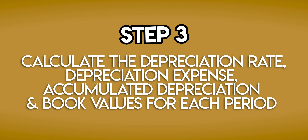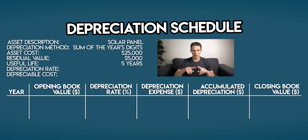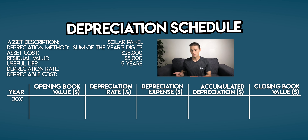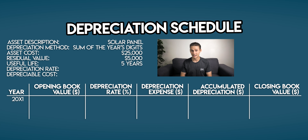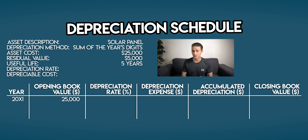Step three: calculate the depreciation rate, depreciation expense, accumulated depreciation, and book values for each period. We'll begin with year one. Your opening book value is the carrying amount of your solar panel at the start of the year. Since this is your first accounting period, that's going to match your asset cost of $25,000.